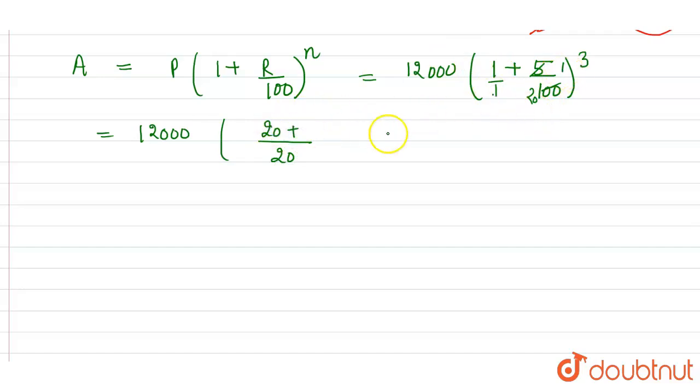And 20 into 1 is 1, and 1 into 1 is 1. So 20 plus 1 raised to the power 3, which equals 12,000 times 21 divided by 20 raised to the power 3. So this is 12,000 times 21 by 20, 21 by 20, and 21 by 20.